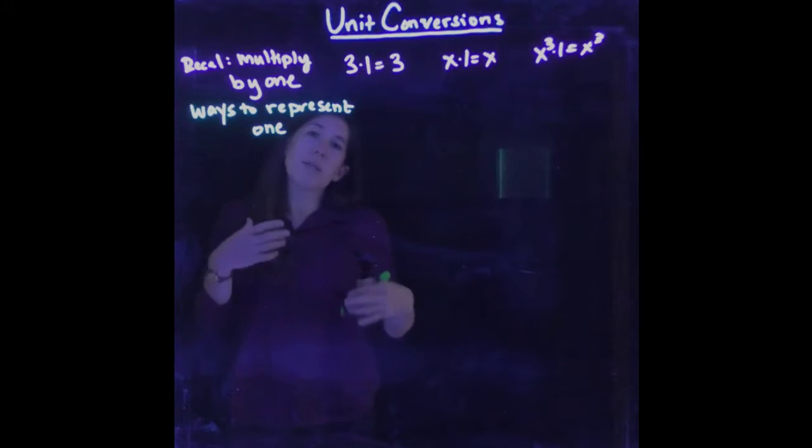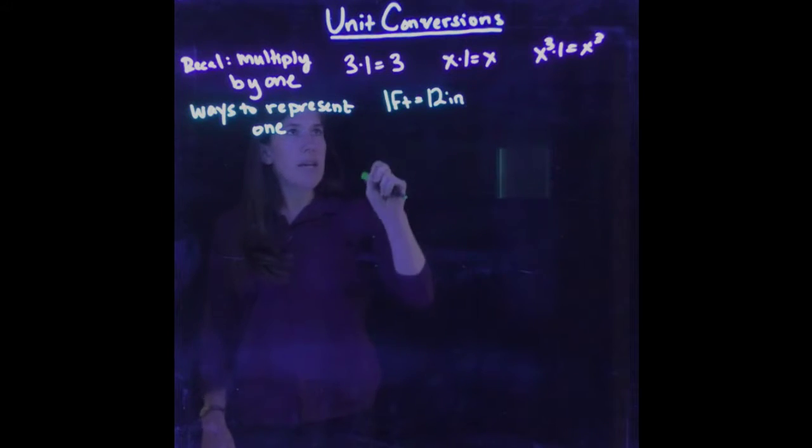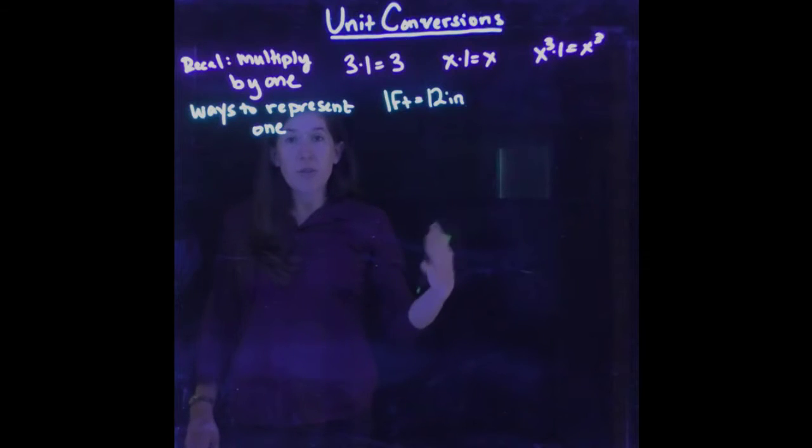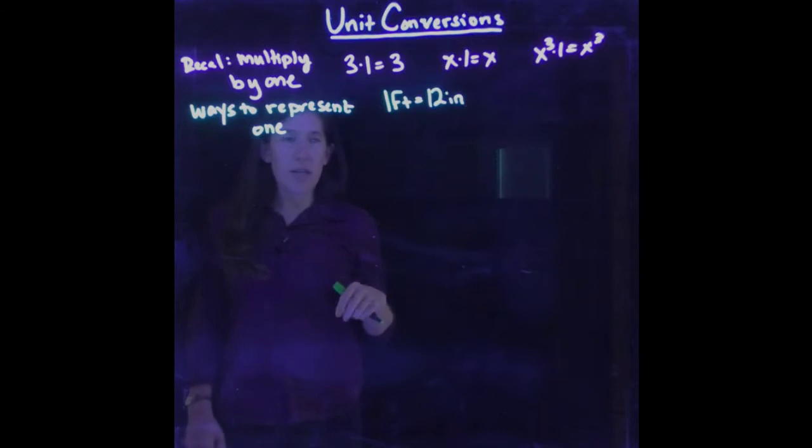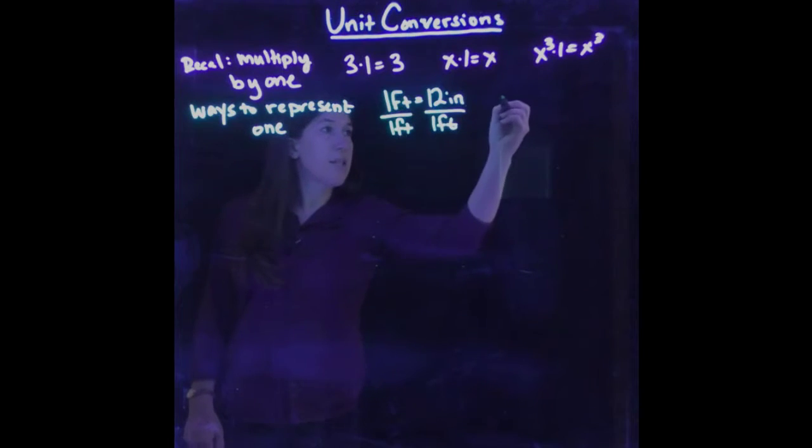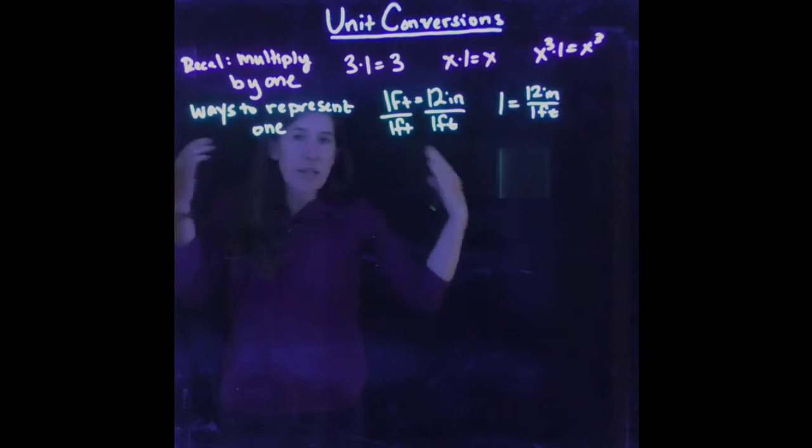You can form different ways of representing the number 1 by starting with any basic equation. So today we're talking about units, so let's think about some equations involving units. For instance, we know that 1 foot is equal to 12 inches. Now when I say 1, I really mean the pure number 1. This 1 foot is something that has units, so it's different from the pure number 1. So I want to form the pure number 1 from this equation. And how do I do it? Well, it's really simple. I could divide both sides by 1 foot. And then from this equation, I see that we get 1 on the left-hand side. So we get 1 is equal to 12 inches divided by 1 foot. So now we have a new way of representing the number 1.